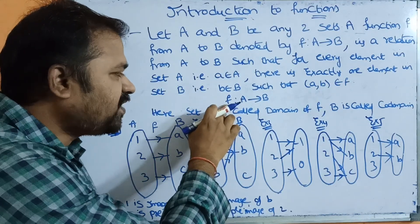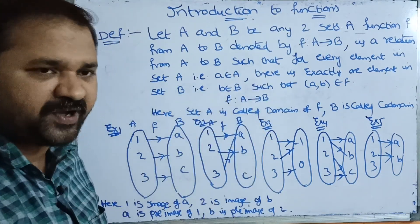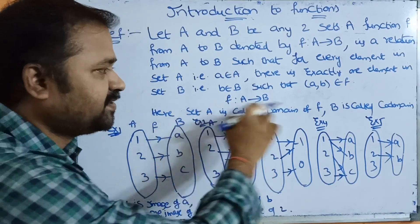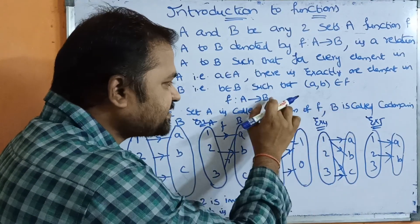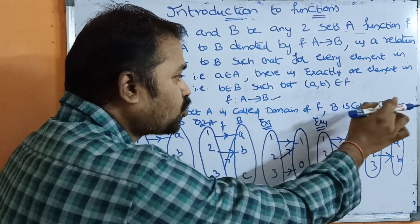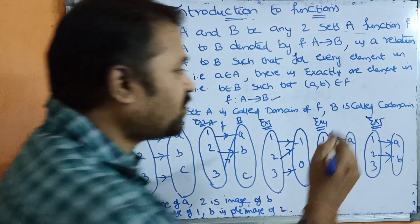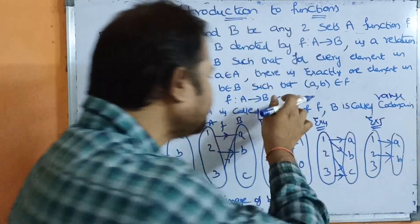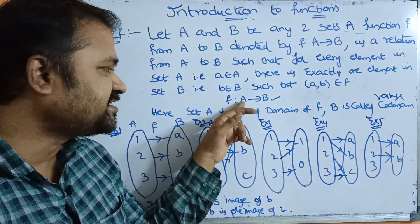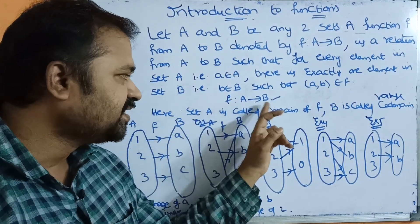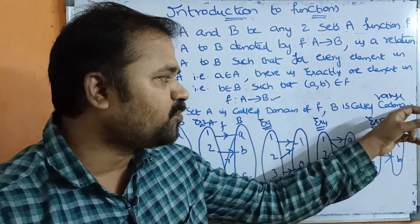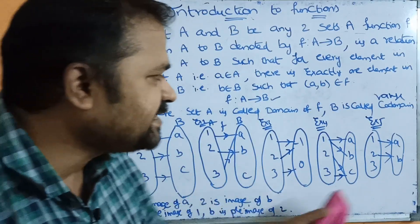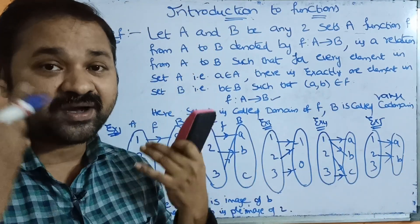In a function F: A → B, set A is called the domain of the function, and set B is called the co-domain or range of the function. The first set is the domain and the second set is the co-domain or range.